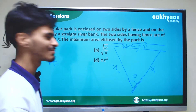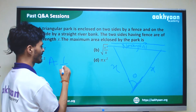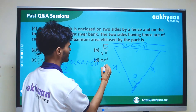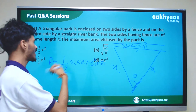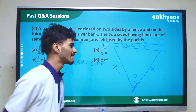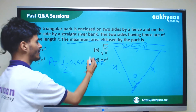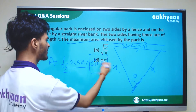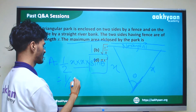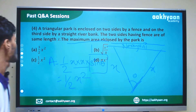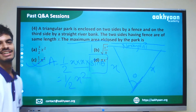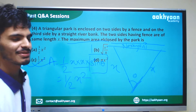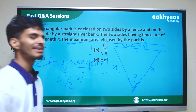The area equals (1/2) × x × x × sin(θ), where θ is the angle between the two equal sides. The maximum value of sinθ is 1, so the maximum area is (1/2)x². Therefore C is the correct option.